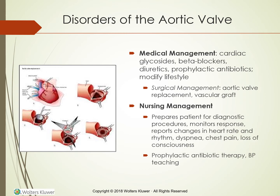Before giving beta blockers, take the client's apical pulse. If the heart rate is less than 60 beats per minute, do not give the drug and notify the primary health care provider. Closely monitor clients taking beta blockers for signs and symptoms of overdosage such as bradycardia, severe dizziness, drowsiness, and bluish discoloration of the palms or fingernails. When a client becomes symptomatic, replacement of the diseased aortic valve is considered. The less heart damage that occurs before surgery, the better the outcome. If the aorta is diseased, the procedure involves a vascular graft.